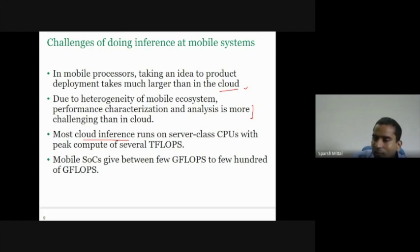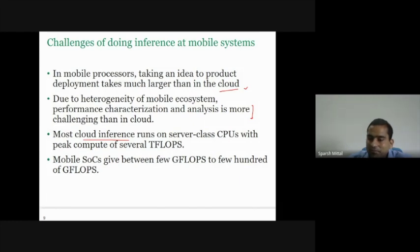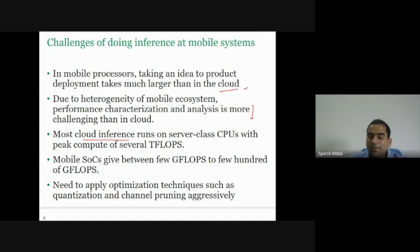Mobile SoCs give between a few gigaflops to a few hundred gigaflops, while server CPUs give teraflops. Giga means 10 to the power 9, tera means 10 to the power 12. Mobile SoCs have much less compute capability than cloud CPUs. That's why you need to apply optimization techniques such as quantization and pruning when doing inference on mobile.